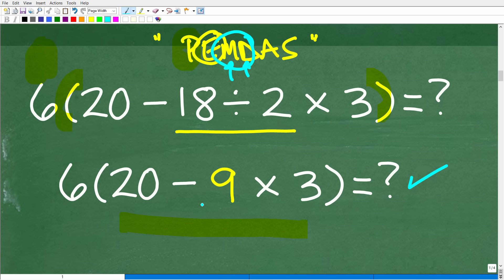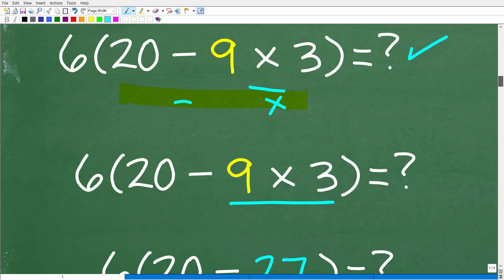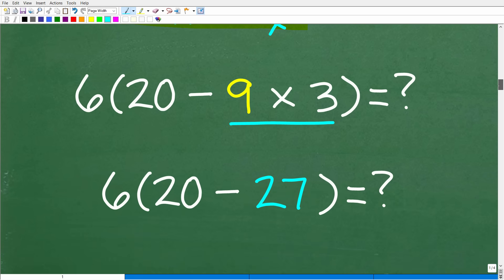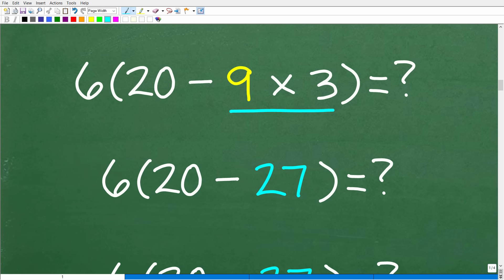So now we're going to continue on and continue to work inside of the parentheses until we get this down to one number. So we have 20 minus nine times three. I'm just looking at PEMDAS here or the order of operations. We have subtraction and multiplication. So it's pretty clear who the winner is going to be. We're going to have to do that multiplication next. So let's go ahead and handle that right now. So we have 20 minus nine times three. We'll do multiplication because that trumps the subtraction. So nine times three is going to be 27.